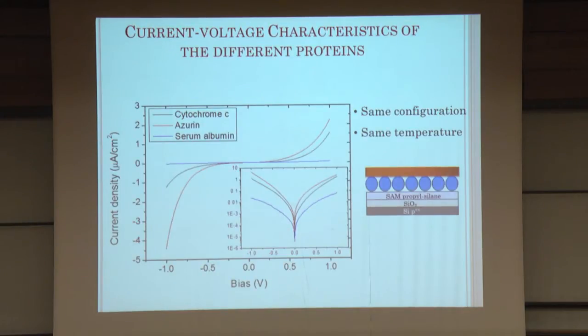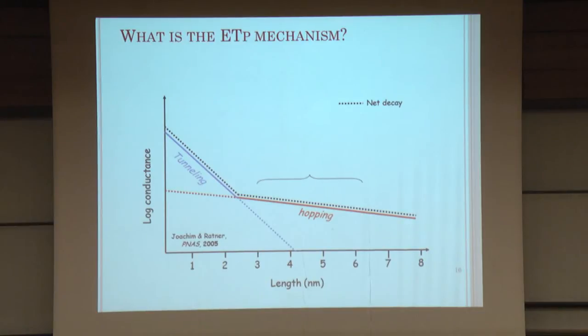So here are current voltage characteristics, current density voltage, for various proteins. Serum albumin, azurine, and cytochrome C. The proteins that were on the menu, if you remember. So these are the two that have in nature the function of transferring electrons. And this one does not. And lo and behold, on the linear scale, you see that they are separated. And indeed, there's about an order of magnitude, two orders of magnitude difference between the two in terms of efficiency by which they transport current. And they transport current a lot better than what you would expect, that you would get probably something like nano or picoamps. This is at room temperature. And they all are in exactly the same configuration.